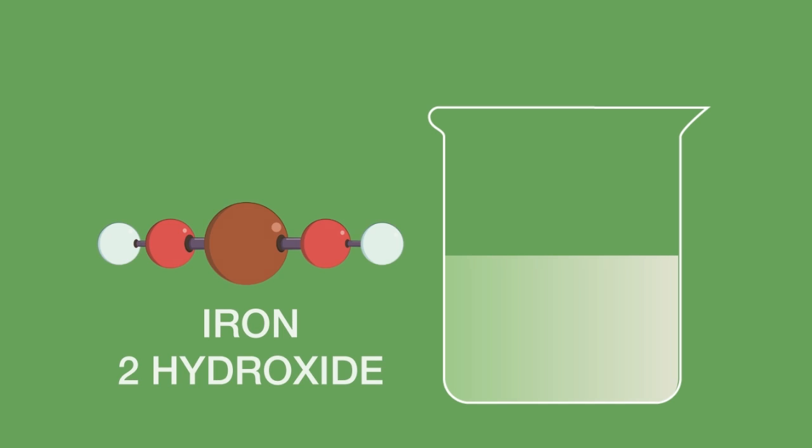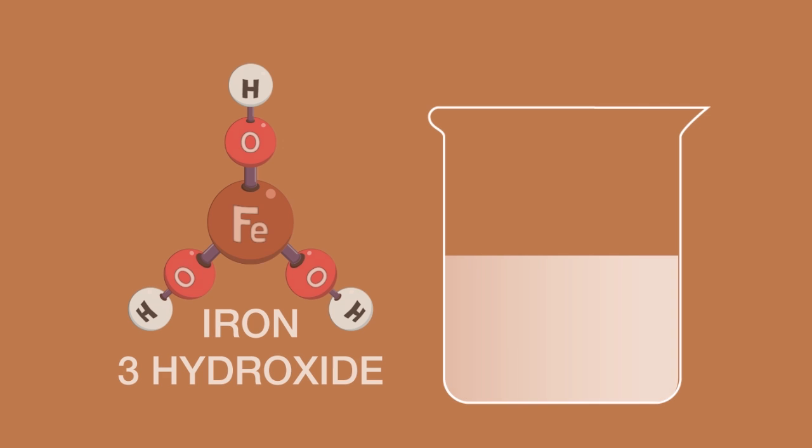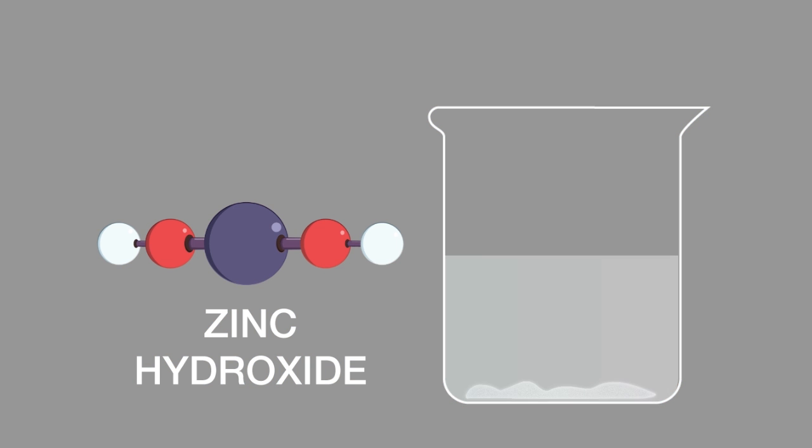Iron 2 hydroxide is a green precipitate, which slowly becomes reddish brown upon standing. Iron 3 hydroxide is a reddish brown precipitate. Zinc hydroxide is white.